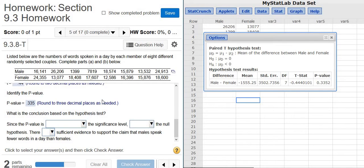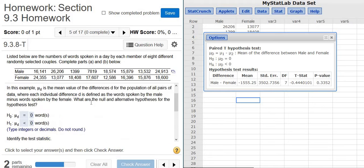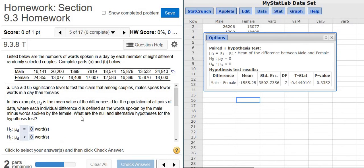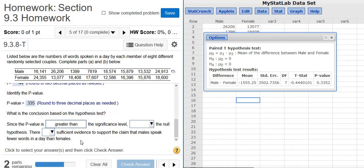And then since the p-value is, well, alpha here was 0.05. So the p-value is greater than alpha. Whenever the p-value is bigger than alpha, you fail to reject. If it's smaller, you reject. So in this case, we fail to reject the null hypothesis.